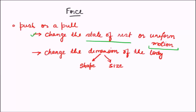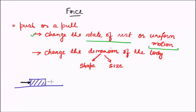Let us imagine a box lying on a floor. This box will stay on the floor for an infinitely long time if we do not apply any force on it. But if you apply a force on the box from one direction, then the box will start moving in that direction. So before applying the force, the box was in a state of rest, and once we applied the force, it changed the state of rest and brought it into motion.